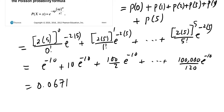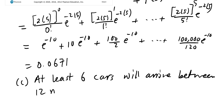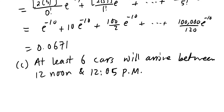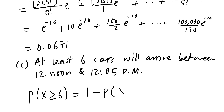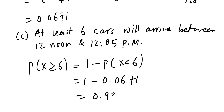What's the probability that at least six cars arrive between 12 noon and 12:05 p.m.? That means P(X ≥ 6). Using the complementary rule: 1 − P(X < 6) = 1 − 0.0671 = 0.9329.